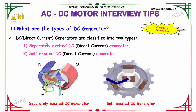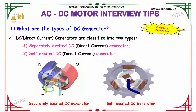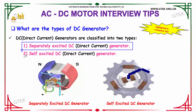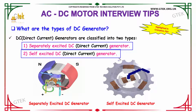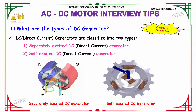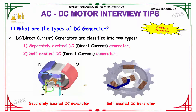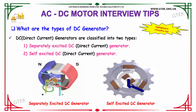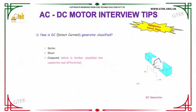The next question is: what are the types of DC generator? The types of DC generator are classified into two. The first one is the separately excited DC generator and the second one is the self-excited DC generator. DC is nothing but direct current. You can check out the depiction of separately excited DC generator and the self-excited DC generator here.